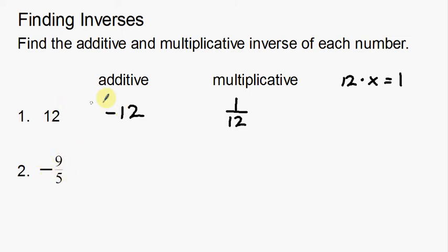So from the first example, we can just see the additive inverse is just going to be the opposite. So the opposite of negative nine-fifths is positive nine-fifths. There's my additive inverse. And then to get the multiplicative inverse, what I want to do is take the reciprocal of this. So my reciprocal is negative five-ninths.